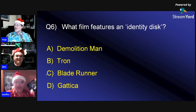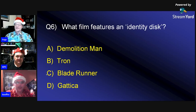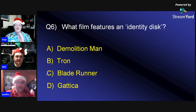Question six: Which film features an identity disc? Is it A) Demolition Man, B) Tron, C) Blade Runner, or D) Gattaca? One participant says B, the other says D.